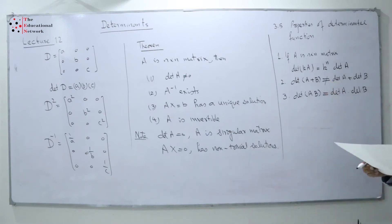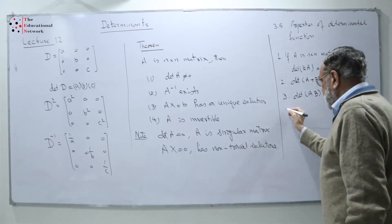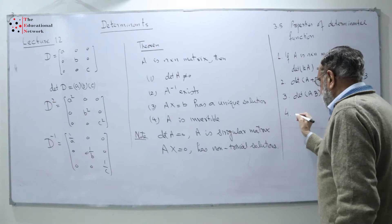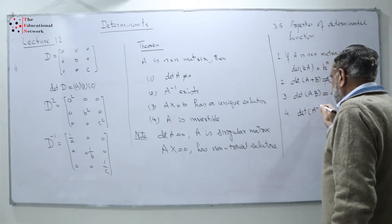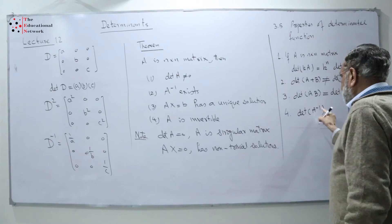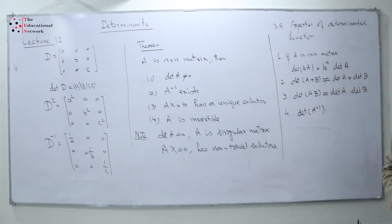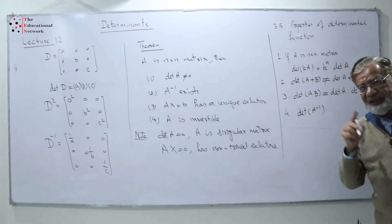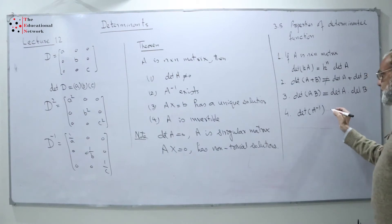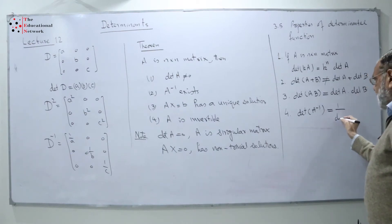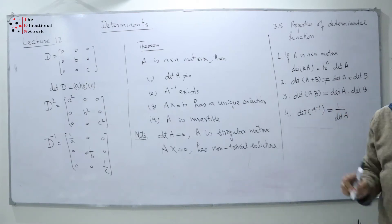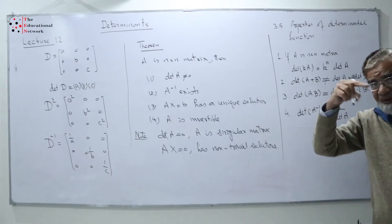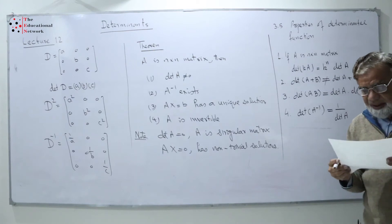There is an important result: the determinant of A inverse. We want to find determinant of A inverse and we have determinant of A — we don't need to solve, find A inverse, and find the determinant. This is simply equal to one over determinant of A. A inverse is not equal to 1 upon A, but determinant of A inverse is equal to 1 upon determinant of A.